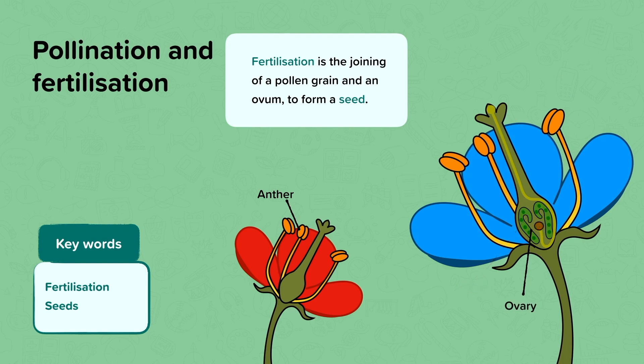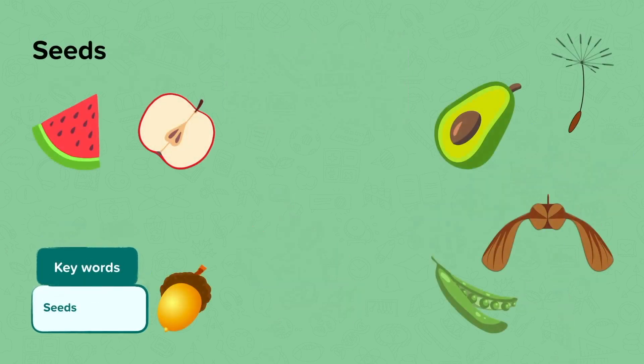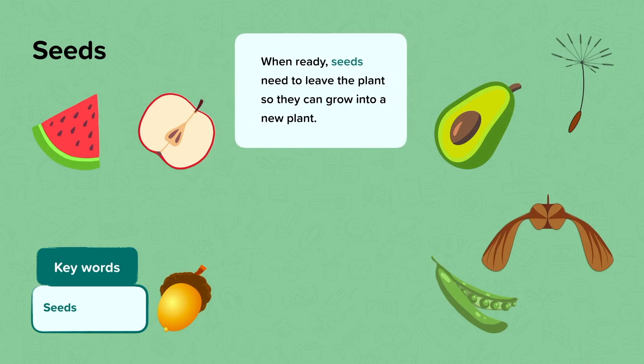After fertilisation, a seed is formed. When ready, the seeds need to leave the plant so they can grow into a new plant.